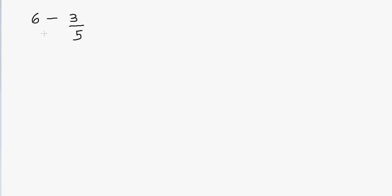Let's get started with the first example. I'm going to subtract a fraction from a whole number. I have 6 minus 3 fifths. The first thing we have to remember is we have a fraction here and a whole number here. We're going to convert both of them into fractions. So let's convert 6 into a fraction. Whenever you have a whole number and you want to convert it into a fraction, you can always set the denominator equal to 1. So I'm going to write this as 6 over 1. This is not changing the value of the problem, because 6 divided by 1 is still 6.